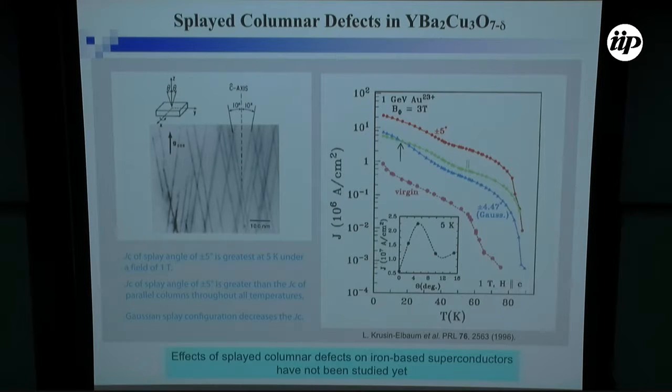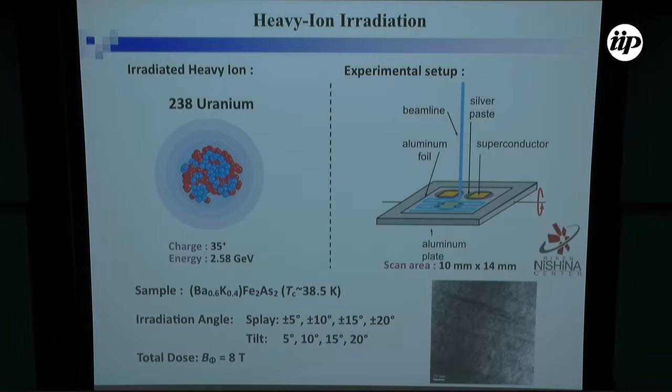This problem has been already attacked by IBM group, by Leah and Leonardo. This is a very beautiful work. They introduced this splayed columnar defects with many splay angles. And they systematically measured JC. So here's a summary, as a function of plus minus splay angle, they get optimal or maximum JC at around five degrees splay angles. This is almost five, four times enhancement compared with the pristine state. But this has not been done in iron-based superconductor. So we did this in the present system.